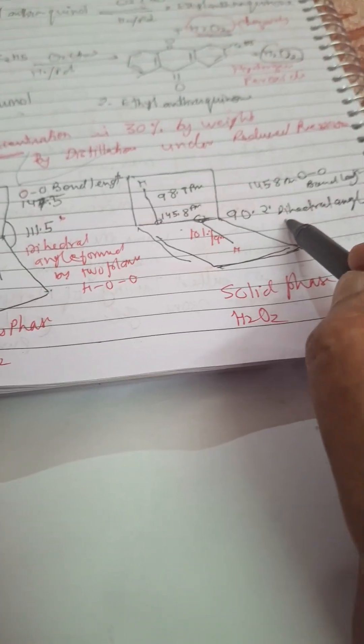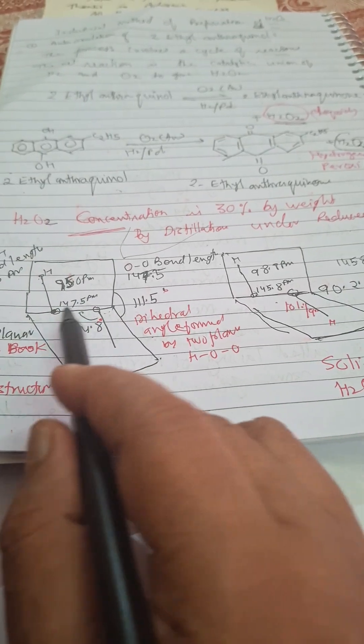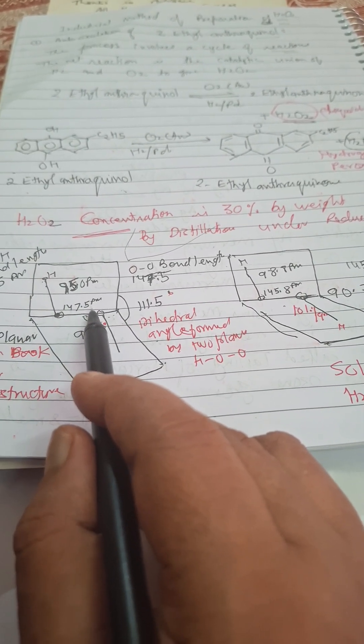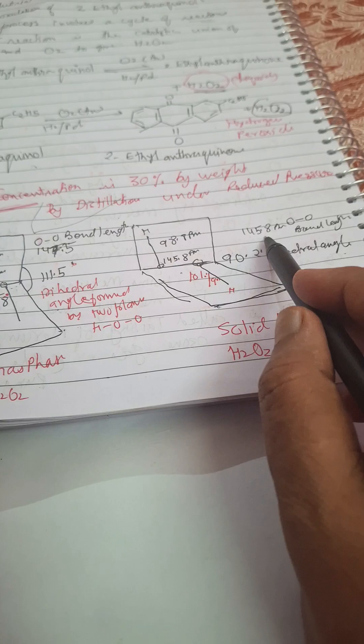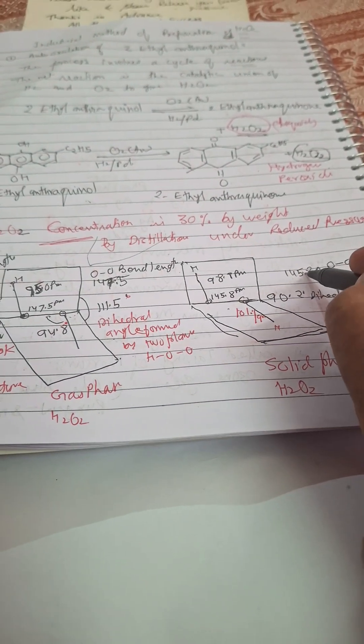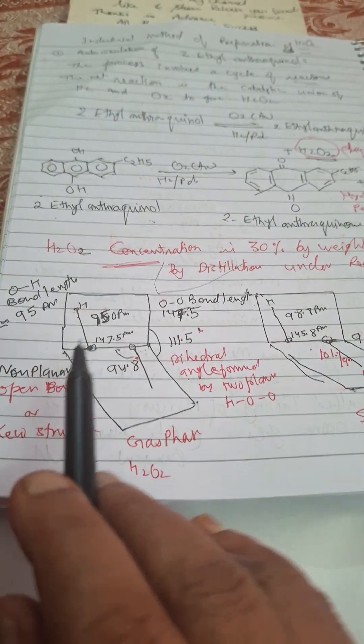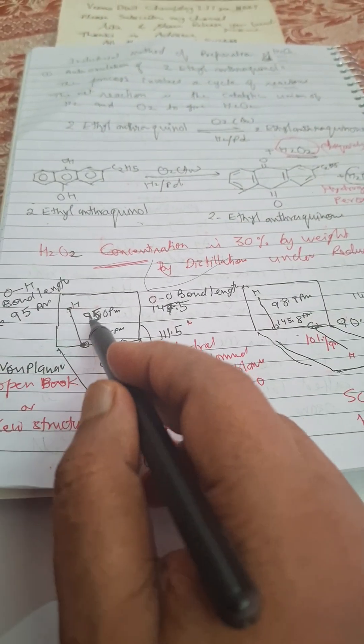Now we'll go for the bond lengths. O-O bond length 147.5 in gas phase, here 145.8 in solid phase. Remember this is very important, don't miss it otherwise one question will be lost, so prepare everything.